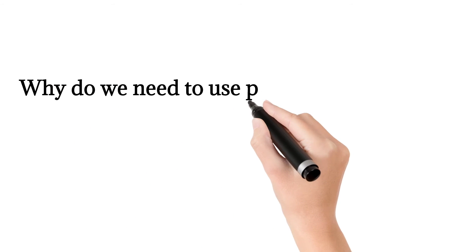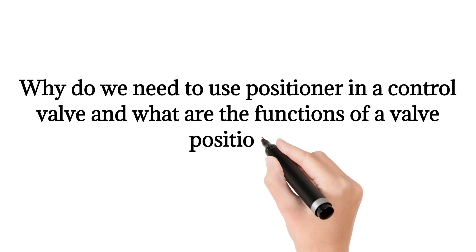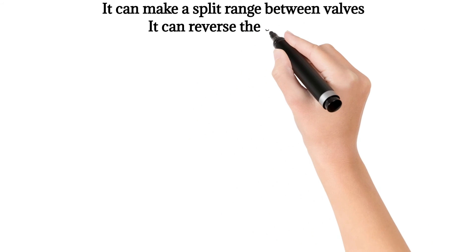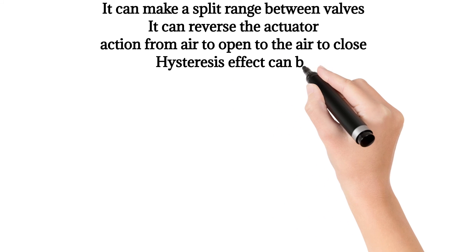Why do we need to use a positioner in a control valve and what are the functions of a valve positioner? It can make a split range between valves. It can reverse the actuator action from air to open to air to close. Hysteresis effect can be reduced.